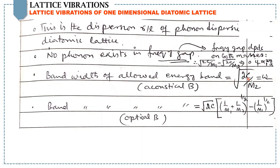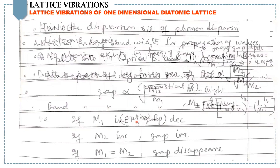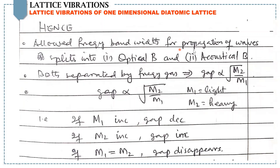The bandwidth of the allowed energy band equals √(2C/M2) for ω₋, belonging to the acoustical branch, and the bandwidth of the other allowed energy band equals this expression for the optical branch. The allowed frequency bandwidth splits into two branches — optical and acoustical — with a frequency gap proportional to √(1/M1). If M1 increases, the gap decreases; if M2 increases, the gap increases; and if both masses are equal, the gap disappears.